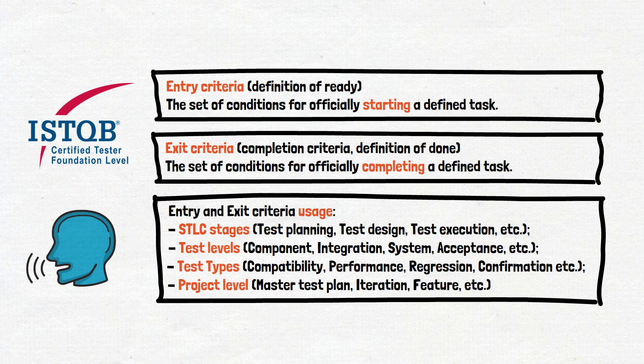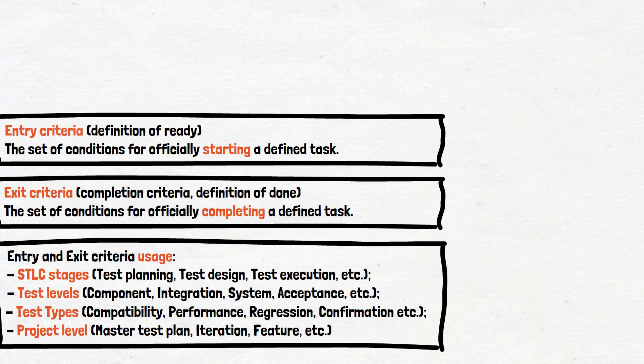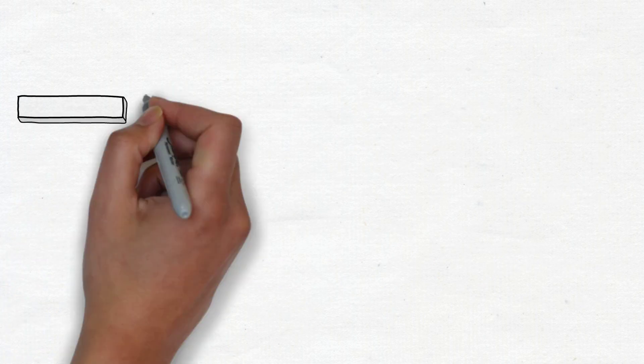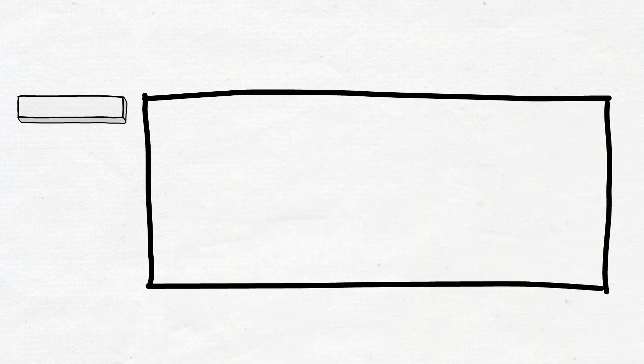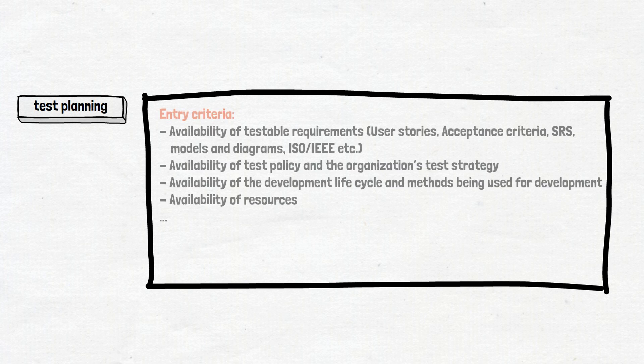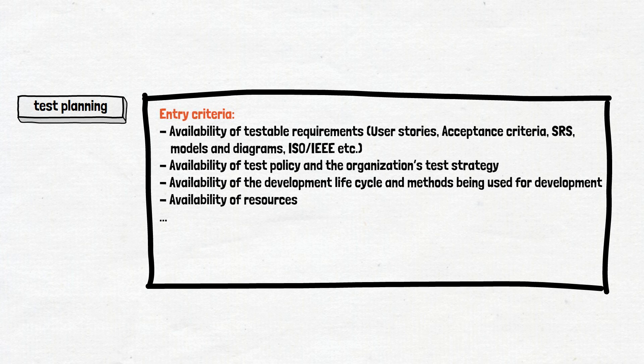As we said before, the most popular example is the entry and exit criteria for each test activity in the STLC. Therefore, we'll try to give our own examples for all the activities mentioned, from test planning to test completion. Let's start with test planning. To start the test planning activity, the test expert needs requirements.